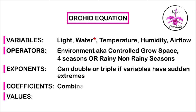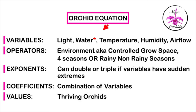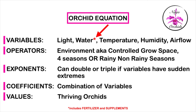Our operators are the four seasons, or rainy and non-rainy seasons — basically our environment. Exponents are not really a factor in our orchid equations; however, they may need to be added to the variables depending if any single one of those, or multiple, reach out-of-the-norm influences. Our coefficients are when we combine our variables: light, water, temperature, and humidity fluctuations. Our constants — or let's stretch the term to our values — are the orchids themselves.